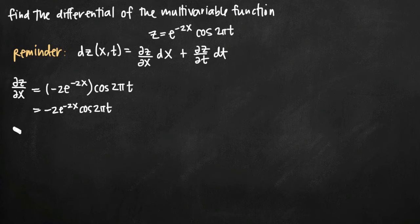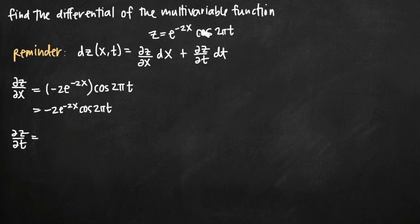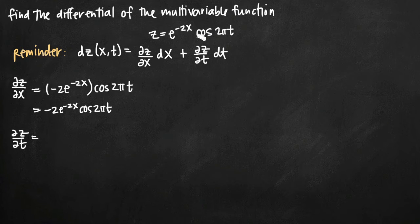Now if we take the partial derivative of z with respect to t, we have the opposite situation — we treat t as the variable and hold x as a constant. If we treat x as a constant, then e to the negative 2x is just a coefficient on cosine of 2 pi t. We can essentially ignore it for the purposes of taking the derivative of cosine of 2 pi t. For that derivative, we'll have to use the chain rule, where cosine is the outside function and 2 pi t is the inside function.